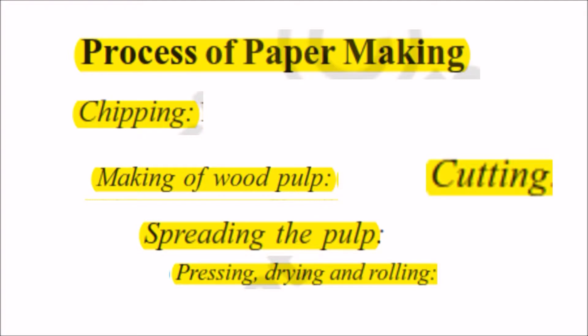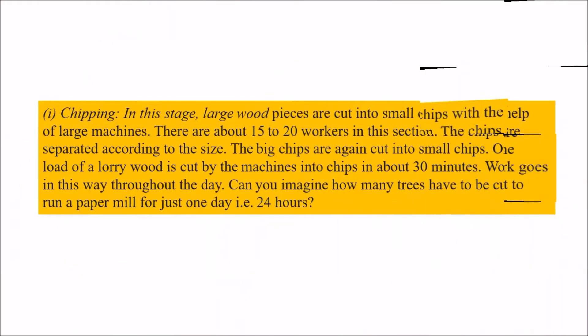The first stage is chipping. Large wood pieces are cut into small chips with the help of large machines. There are about 15 to 20 workers in this section. The chips are separated according to size — big chips are cut again into smaller chips. It takes 30 minutes to cut one lorry-load of wood, and the work goes on throughout the day.